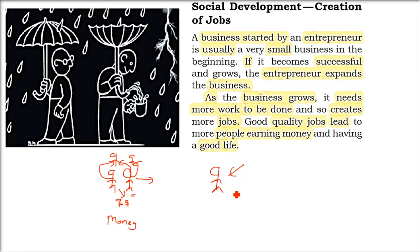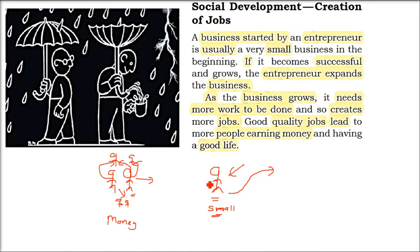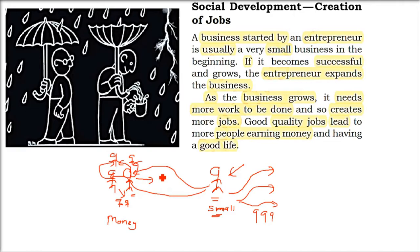So if somebody starts a business and is an entrepreneur, they may start with a very small initial business. Maybe some businesses just vanish because the ideas are not good or they've made some mistake. But when the work grows from small to big, the entrepreneur will expand the business. When they expand, they are going to give jobs because they might need more people from different fields and different educational backgrounds. That is how jobs will be created.